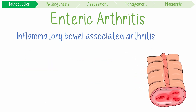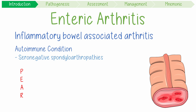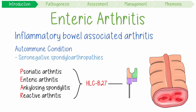It's classified into a group of autoimmune conditions called the PAIR diseases, formally described as the four types of seronegative spondyloarthropathies, and include psoriatic arthritis, enteric arthritis, ankylosing spondylitis, and reactive arthritis. All of these are associated with a specific gene called HLA-B27.